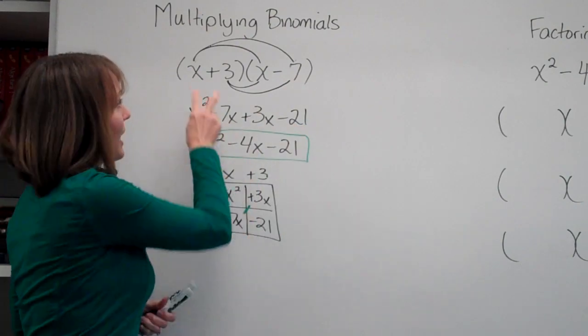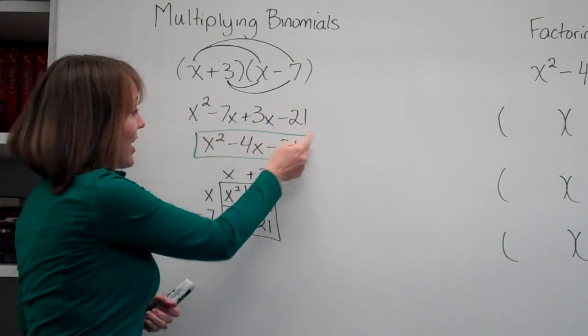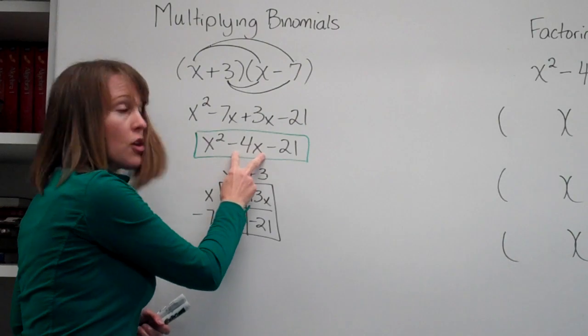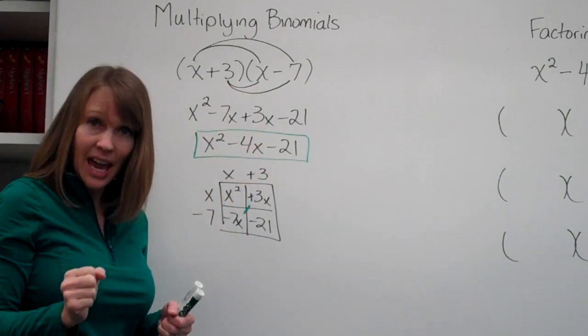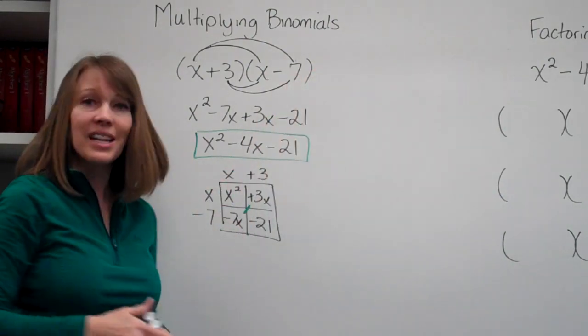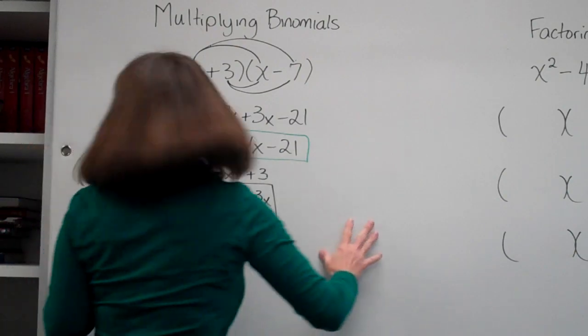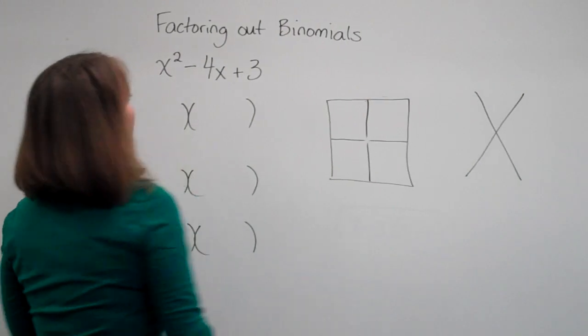So we multiplied 2 binomials together to get 4 terms that simplify to a trinomial. That means this trinomial and these binomial terms are congruent. What we're going to do today is start here and go backwards and find out what do we multiply to get this in the first place.